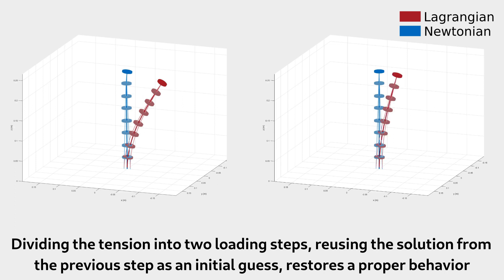Dividing the tension into two loading steps, reusing the solution from the previous step as an initial guess, restores a proper behavior.